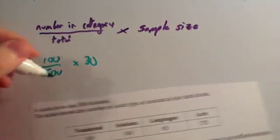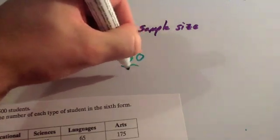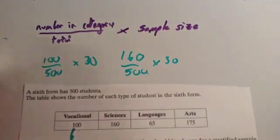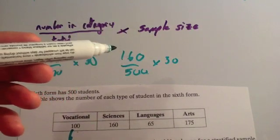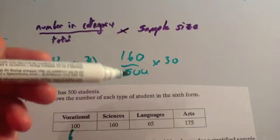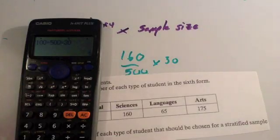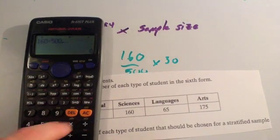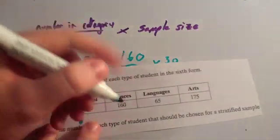Next, sciences. There are 160 scientists out of the 500, times by the sample size of 30. It's just easier to use your calculator: 160 divided by 500 multiplied by 30 equals 9.6.